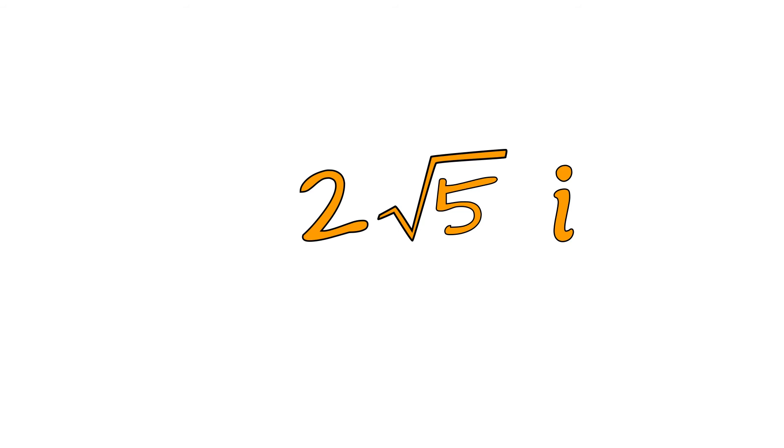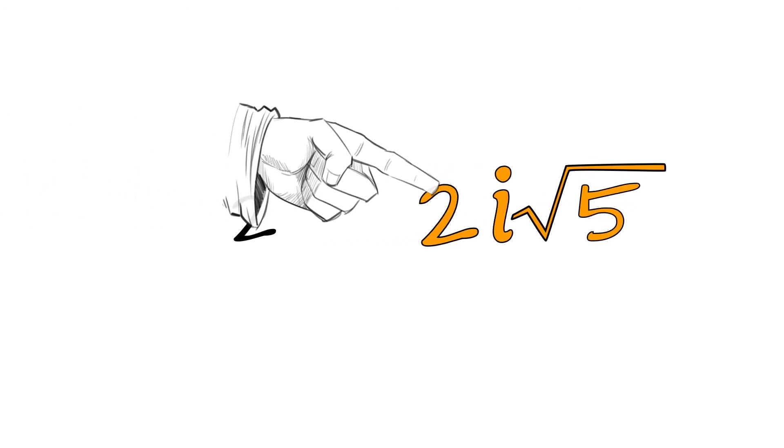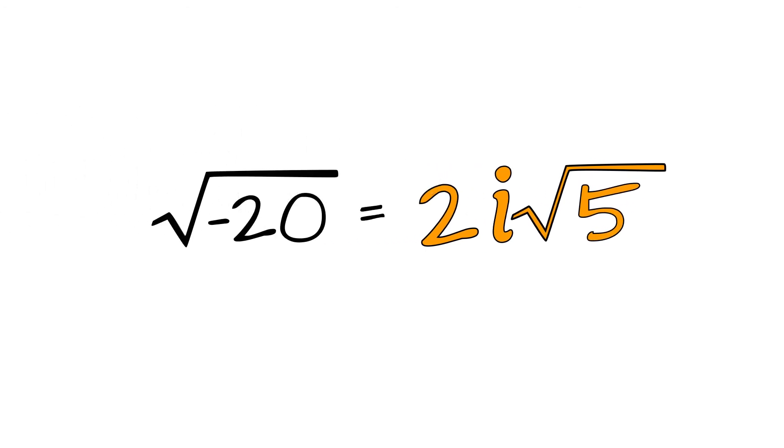So, to make that clear, we put the radical on the end and move the i. Written this way, it is obvious that the 2 and i are not in the radical, and the 5 is. So, the square root of negative 20 is 2i square roots of 5.